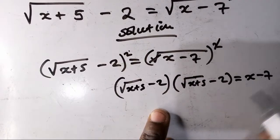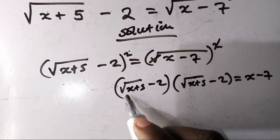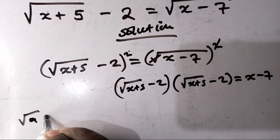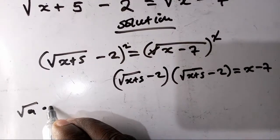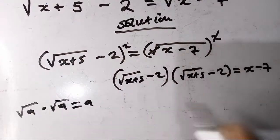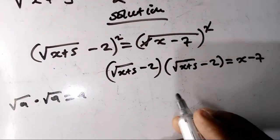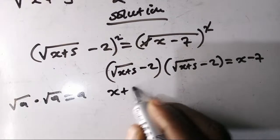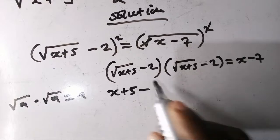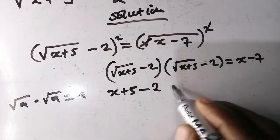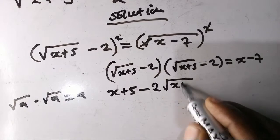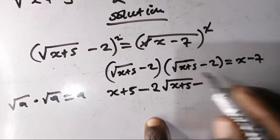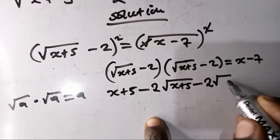We remain with x minus 7 on the right side. Then root x plus 5 multiplied by root x plus 5 — remember, when you multiply a by a you get a squared — so root x plus 5 times root x plus 5 gives x plus 5. Then minus 2 times root x plus 5 gives minus 2 root x plus 5.